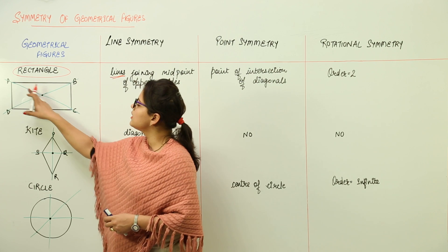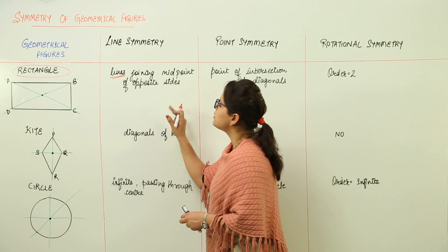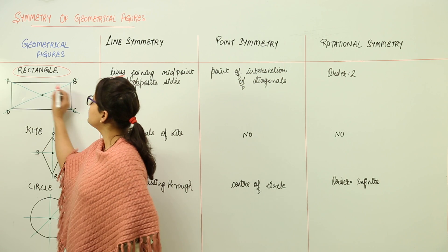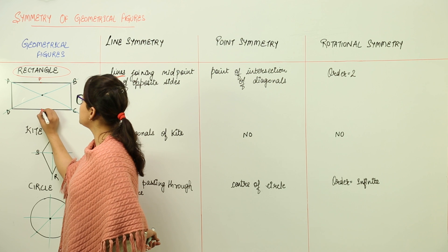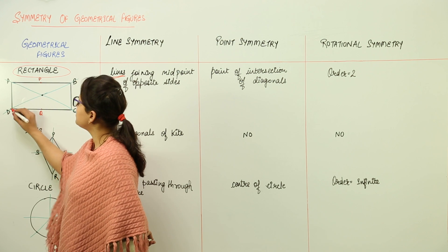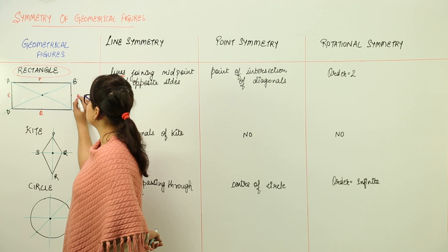Now these are just the diagonals you can see. What will be the lines that are joining midpoints of opposite sides? We have the midpoint of AB as say P, we have the midpoint of DC as Q, we have the midpoint of AD as R and midpoint of BC as S.